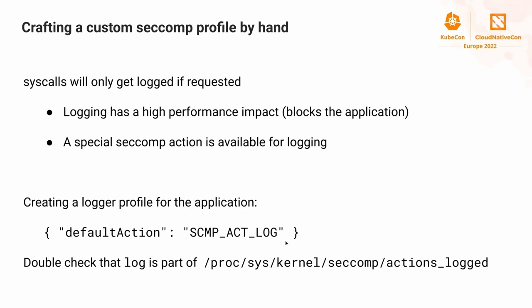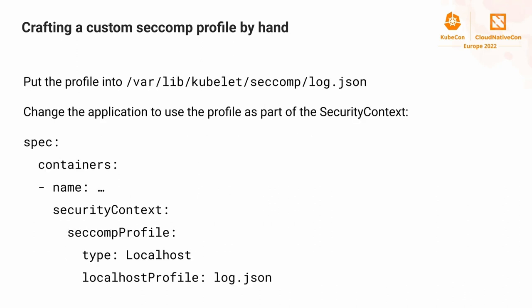Creating a seccomp profile for profiling applications is as simple as specifying a default action of `SCMP_ACT_LOG`. We also have to double check that the `log` keyword is part of the proxy's kernel seccomp actions, otherwise we wouldn't log anything at all. We then put this profile into the default location the kubelet looks for seccomp profiles, which is under the kubelet seccomp directory, naming our file `log.json`.